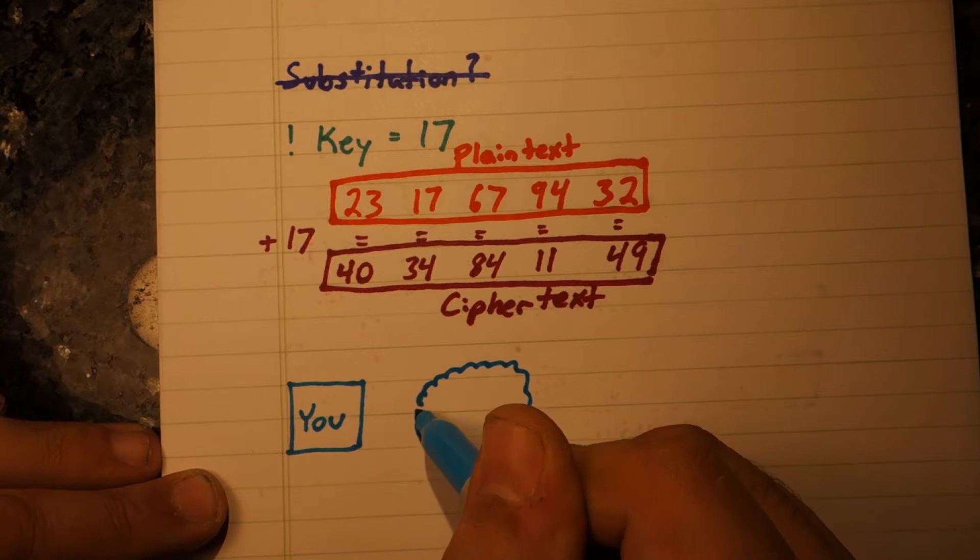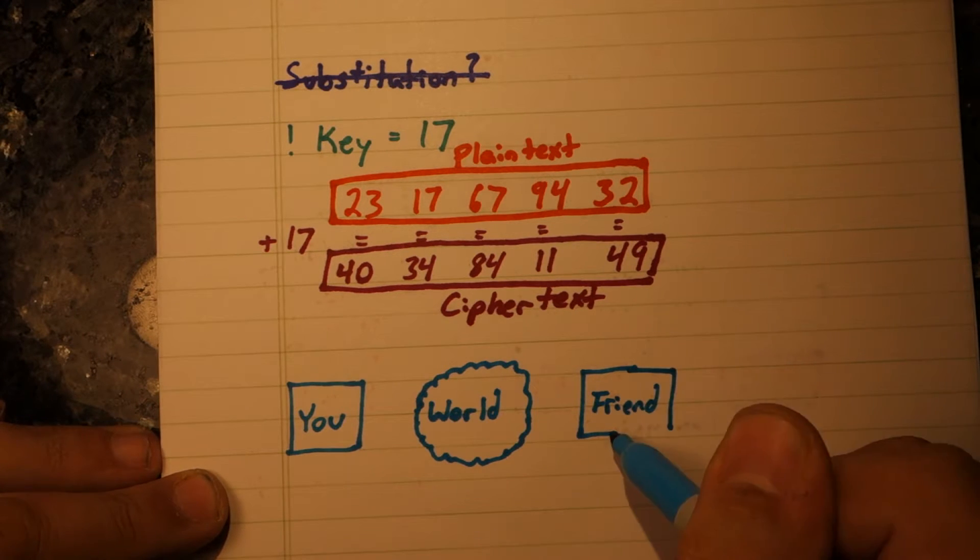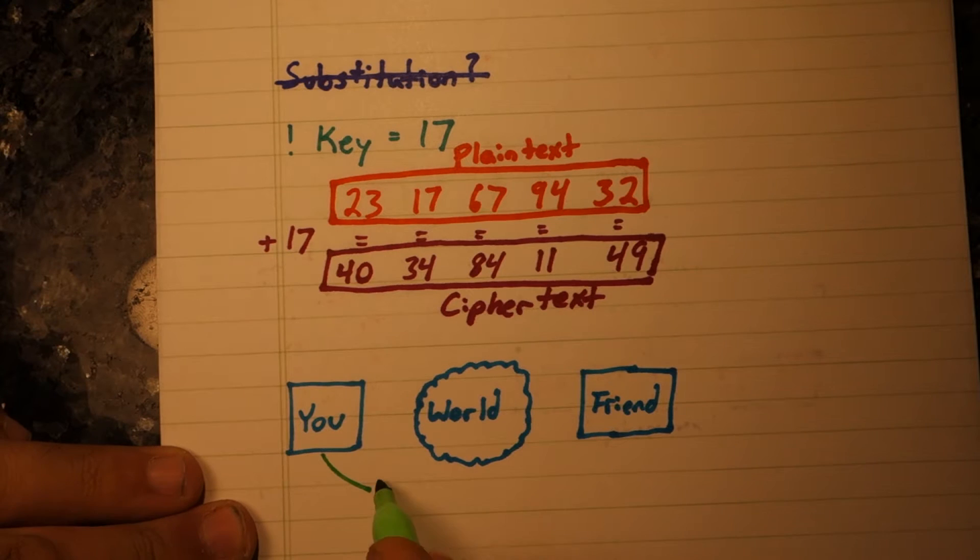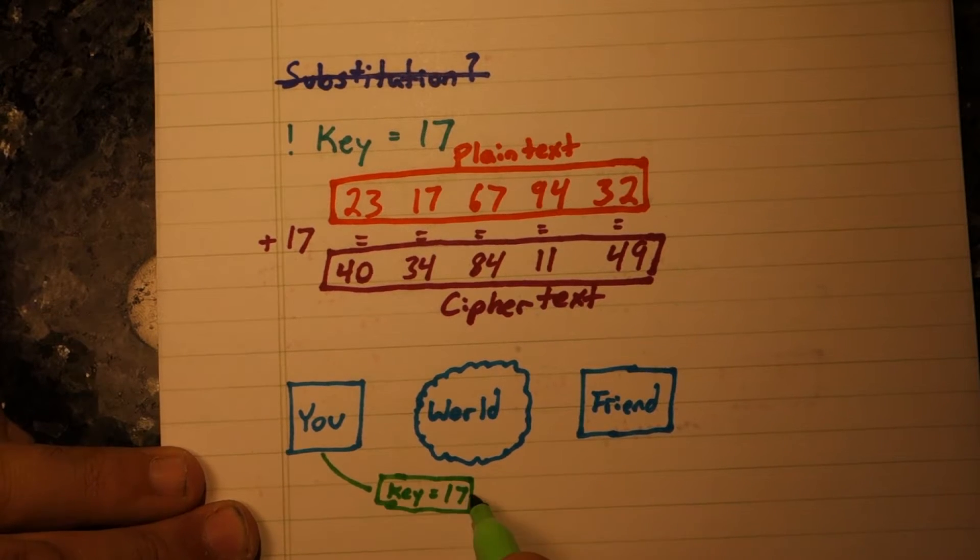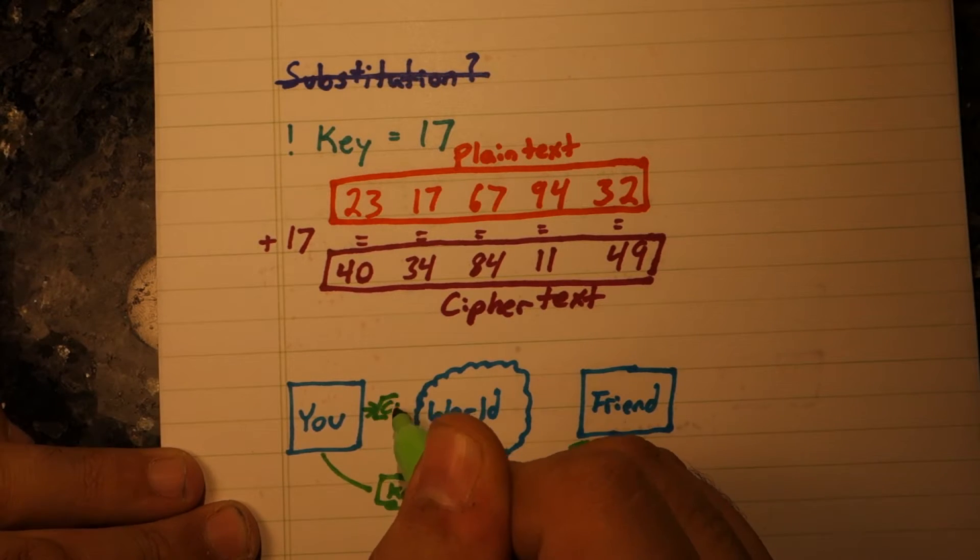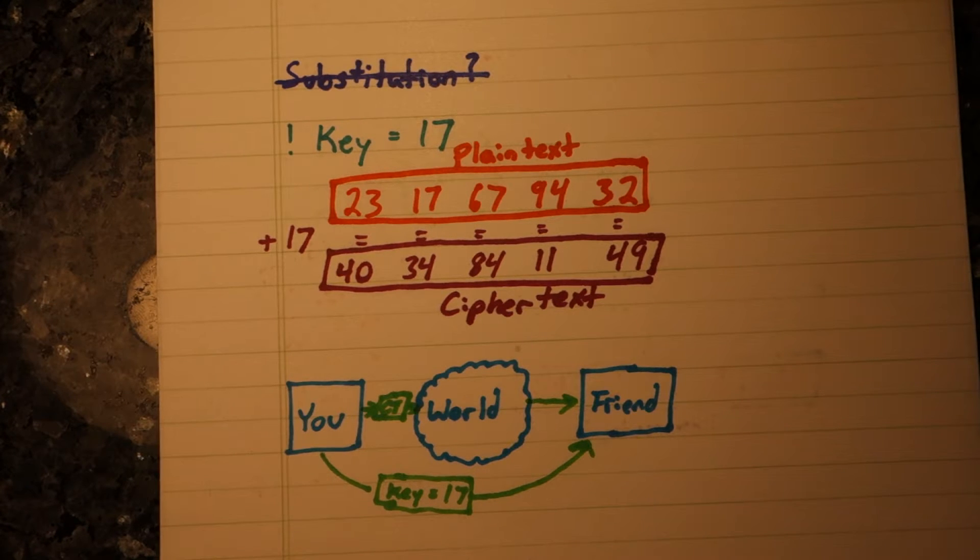Or can we? As it turns out, this has the same problems as before. Given enough encrypted numbers, we can do the same analysis that we did before and determine the key statistically.